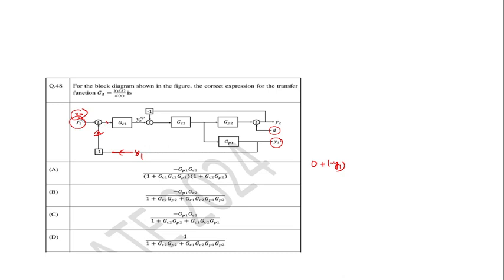We reach this point. This value is zero minus y1 into GC1. If you multiply the whole value with GC1, something is going to add here. That is minus y2, because y2 is the input for this transfer function and y2 into minus 1 gives minus y2, which is subtracted at this point. The whole is multiplied with GC2, then GP2, plus D is added, and that whole is equal to y2. This is equation number one.